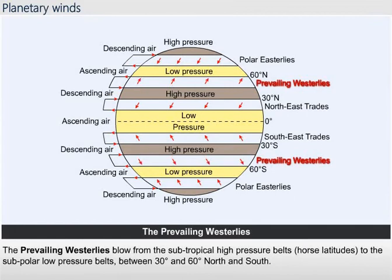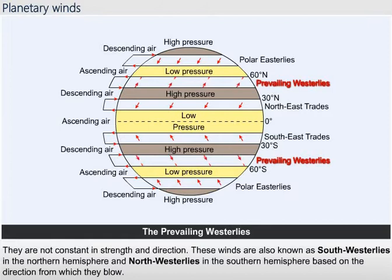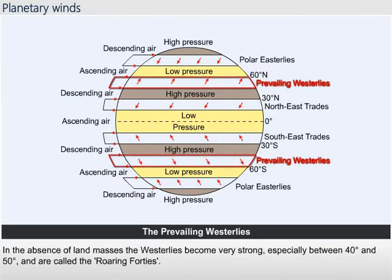The prevailing westerlies blow from the subtropical high-pressure belts (horse latitudes) to the subpolar low-pressure belts, between 30 and 60 degrees north and south. They are not constant in strength and direction. These winds are also known as south westerlies in the northern hemisphere and north westerlies in the southern hemisphere. In the absence of land masses, the westerlies become very strong, especially between 40 and 50 degrees, and are called the roaring forties.